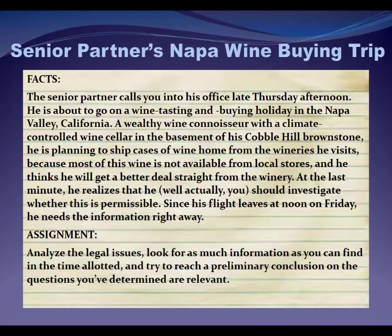Alright, so now let's spend a minute talking about how you go through the process of a legal research problem like the one you see here. What are the first steps? How do you develop a legal research plan? How do you effectively and efficiently conduct legal research? And how do you formulate advice — are you going to send the partner off on his wine buying spree with a happy face or not? Since this is the first class, we're going to spend a little time talking about the process: how do you break the problem down, how do you analyze it, and how do you formulate the answer so you can present it to a senior lawyer or to a client?